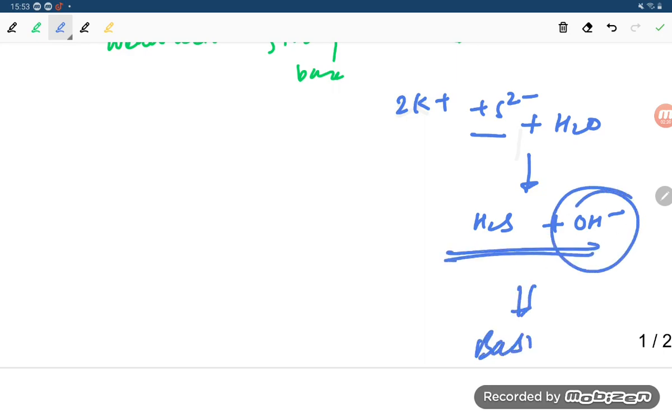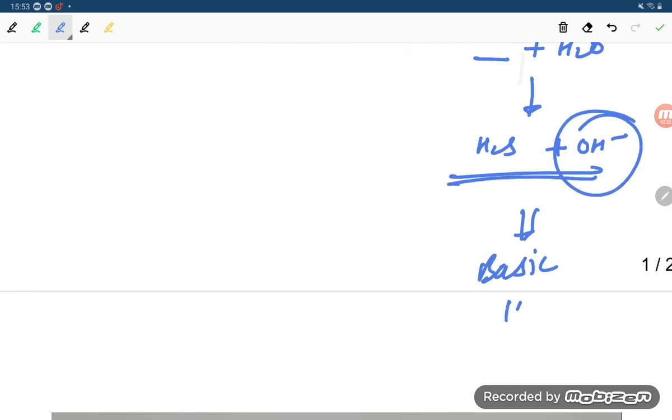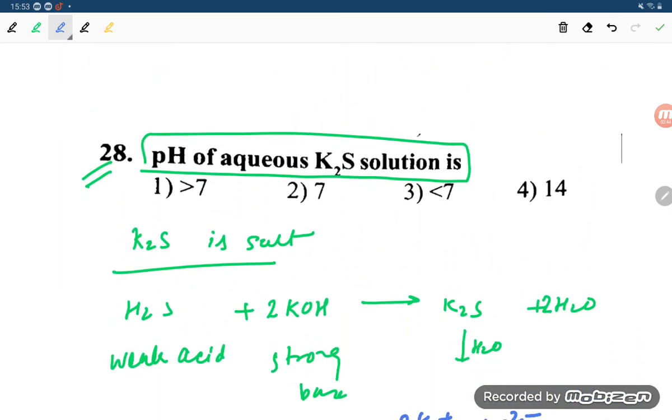And this basic solution implies that the pH will be more than 7. So we can check the options - more than 7. The correct option is option number 1. Thank you so much for watching, friends.